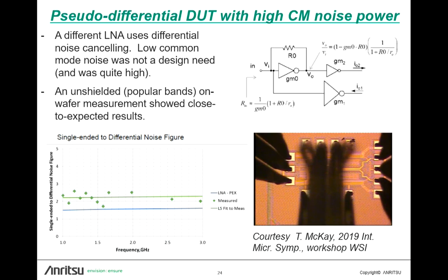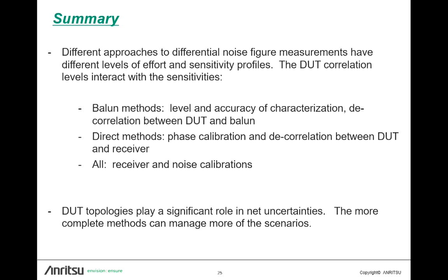That simple device only covered part of the parameter space of possible device designs. A pseudo-differential DUT was presented by a collaborator at a workshop earlier this week — a single-ended-in, differential-out kind of amplifier where some noise cancellation of the differential mode was employed. Where this was being used, there wasn't much concern about the common mode noise power since the following stages all had a lot of rejection. The common mode noise power was about 10 dB higher than the differential in this particular device. Although not completely conclusive, since it was an unshielded on-wafer environment in wireless bands with a lot of ingress that wasn't being corrected, the result came pretty close to what the models were expecting — and some work is ongoing to do this in a proper shielded environment.